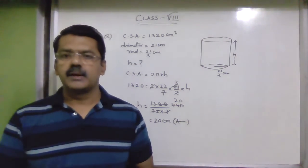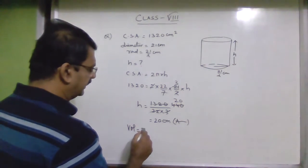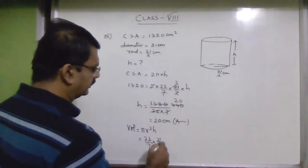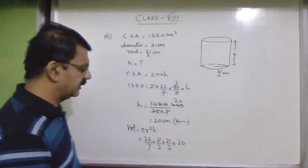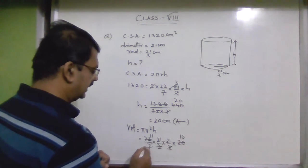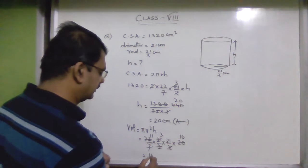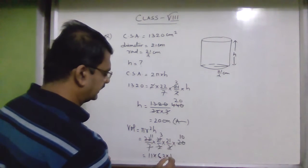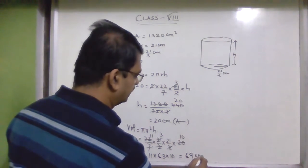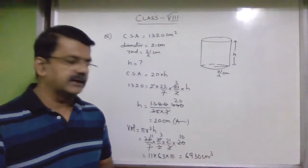Although they have not asked for the volume, we can calculate it. Volume = π r² h = (22/7) × (21/2) × (21/2) × 20. Simplifying: 11 × 63 × 10 = 6930 centimeter cube. That is the volume of this cylinder.